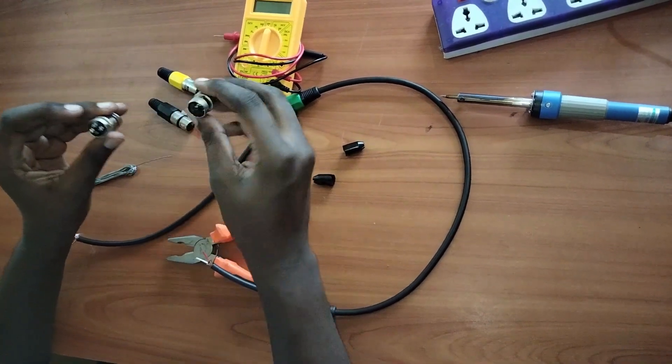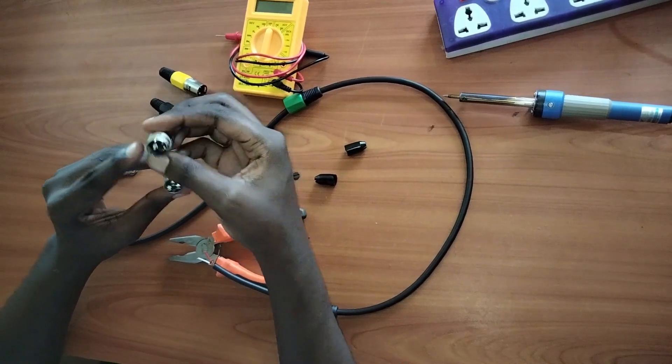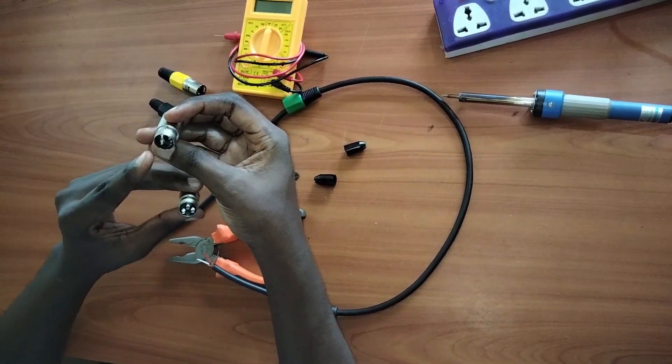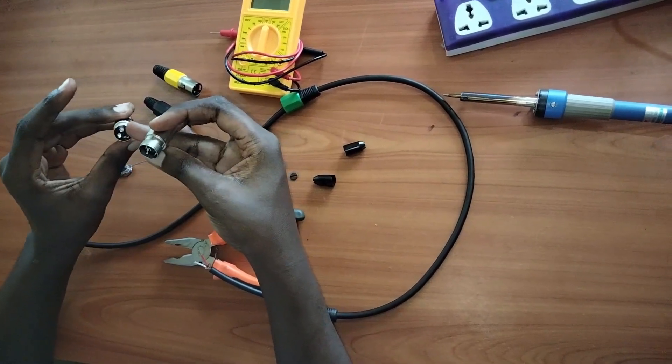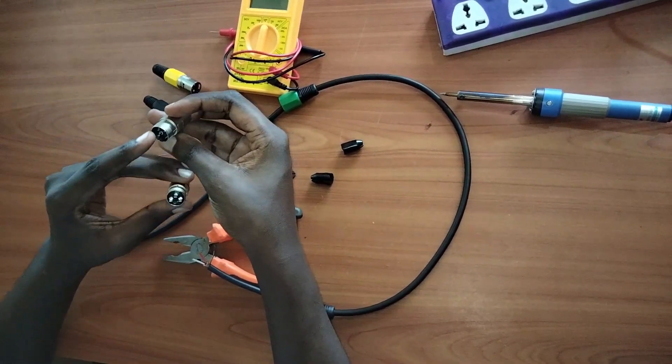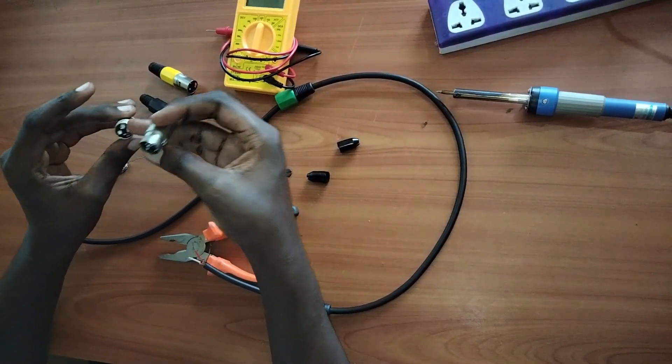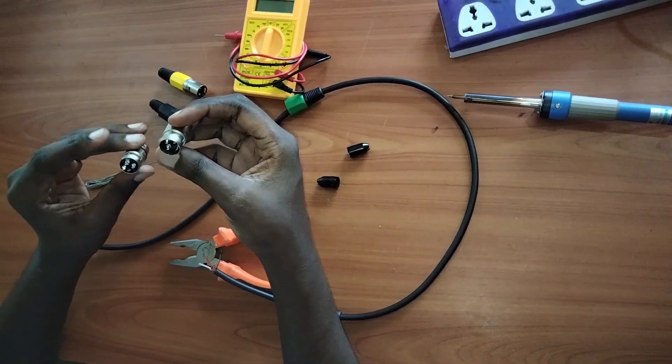And it will be the same in the male connector. Where you put 2 here, the same way it should correspond here. Where you put 1 should correspond here, and where you put 3 should correspond here. Now let's go ahead and solder them.